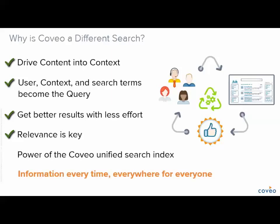Uniformity is the last differentiator. The Coveo index pulls all content equally regardless of its source. Whether the content is pulled from Salesforce, Fileshare, Website, Database, or Exchange, all of these sources are unified under the Coveo proprietary index, which allows us to uniquely match terms and evaluate ranking in a very comprehensive way. This provides a consistent experience available on all user interfaces, meaning the capabilities and features are the same on websites or embedded applications across all devices. And that is how Coveo Search provides information every time, everywhere, for everyone.